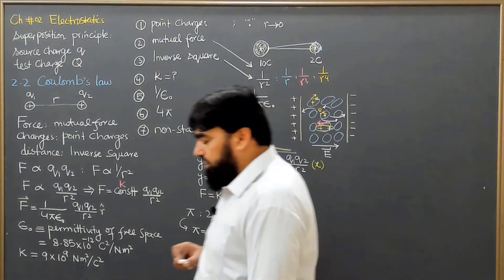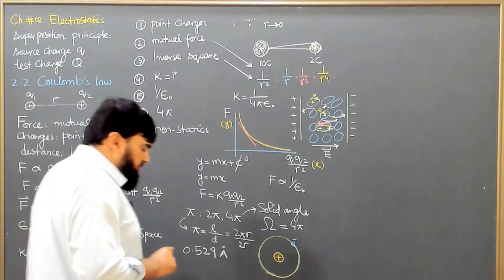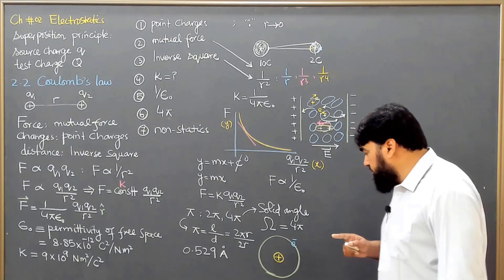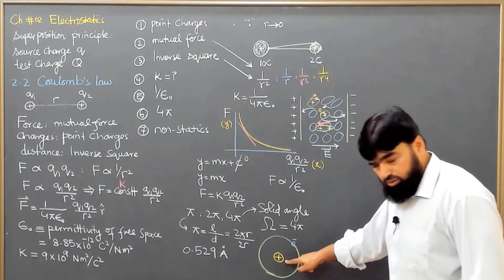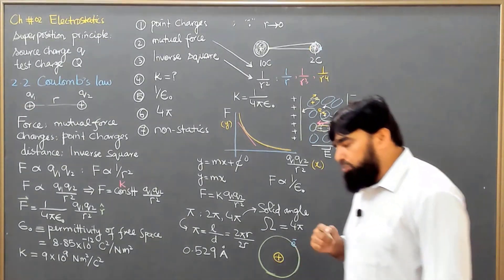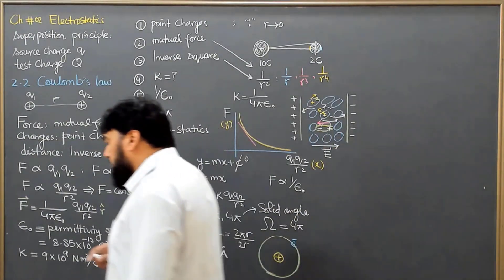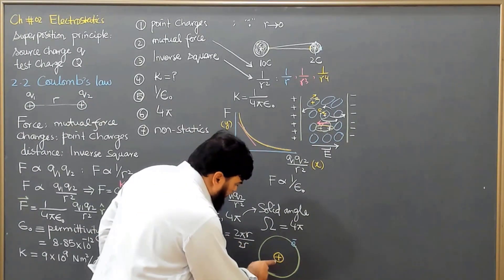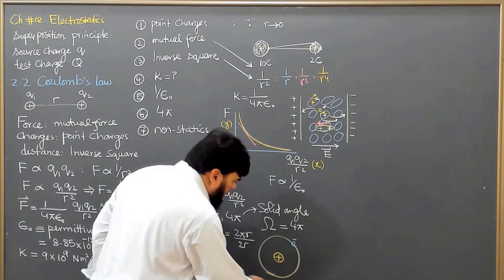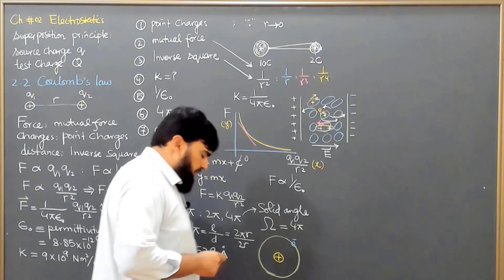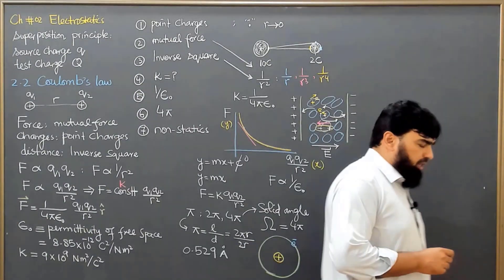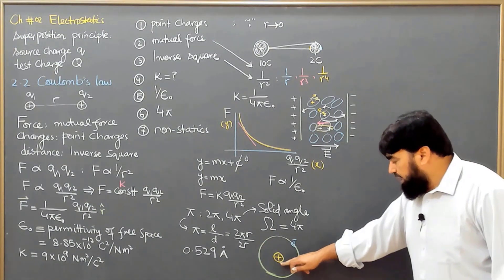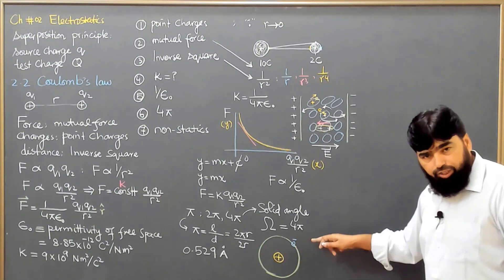But there is another insightful thing in this one, that if we look from the point of view of proton, then what the proton is seeing. How the protons come to know that electron is going around me? And that we know that there is a field, which is the electromagnetic field.